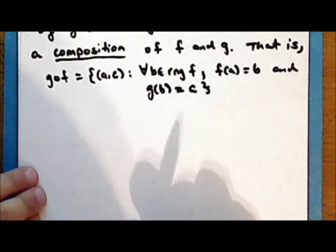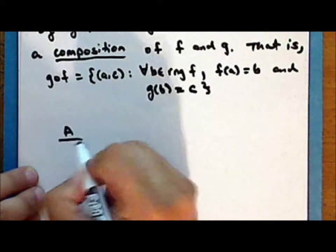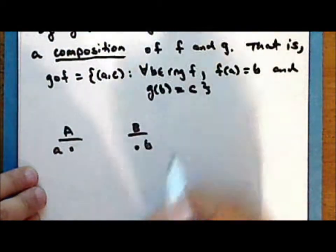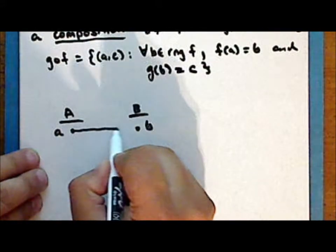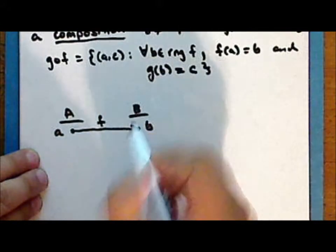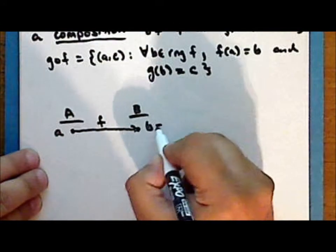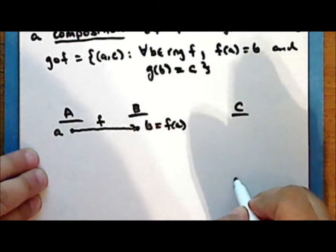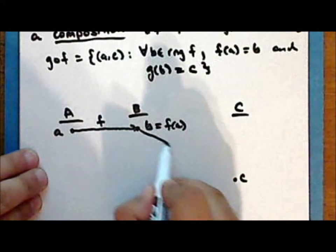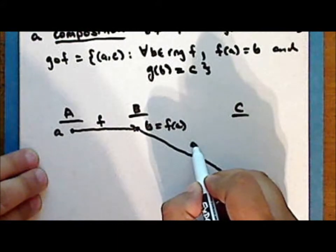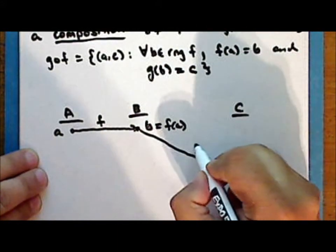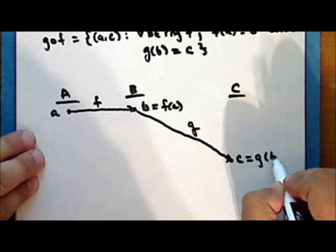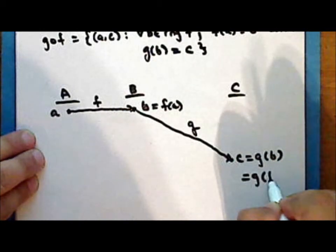So let's look at a map diagram tracing a single element. An element a in the set A is mapped onto an element b in the set B by the function f, so that b = f(a). This element is then mapped onto an element c in the set C by the function g, so that c = g(b) = g(f(a)).